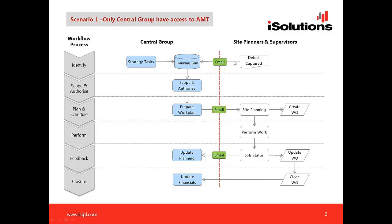The second source is defects that are identified. These most commonly come from on-site inspections or are reported by customers or operators. In that situation, the defect can be captured on a manual piece of paper, emailed to the central group, and entered into AMT. The planning grid in AMT holds a list of all jobs that need to be planned and performed — both strategy tasks and defects.